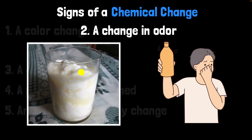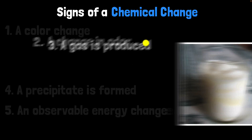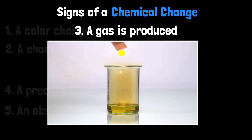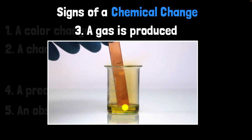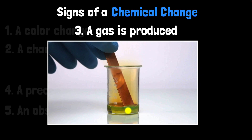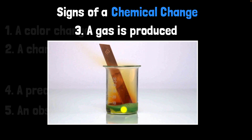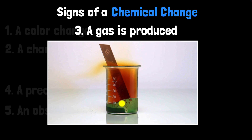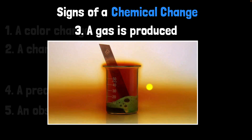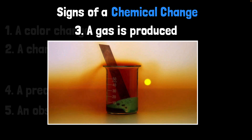Consider what happens when milk goes sour. Sour milk is a new substance and it has a different odor, which you can pretty much smell from miles away. So here's an example of an odor change. Sometimes when new substances are formed, they can have a different state of matter altogether at room temperature. For example, when you pour copper into nitric acid, the new substance — nitrogen dioxide — is a gas at room temperature with color, so you can see it.